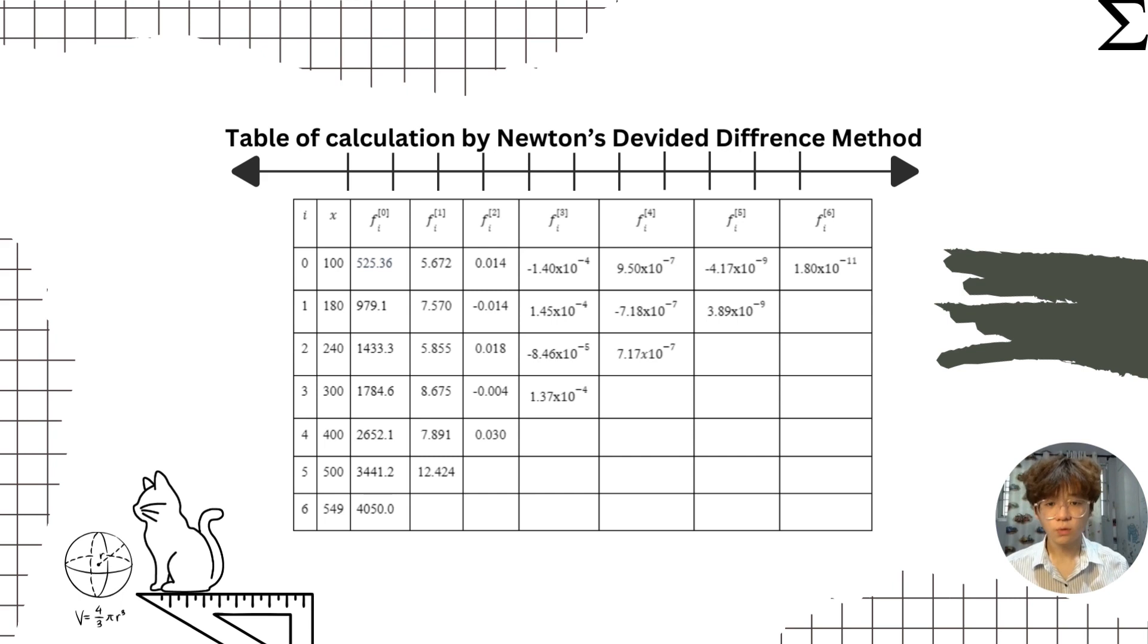In this slide, let's show the table of calculation by Newton's divided difference method. As we can see, the table shows the data of x, first, second, third, fourth, fifth and sixth Newton's divided difference.